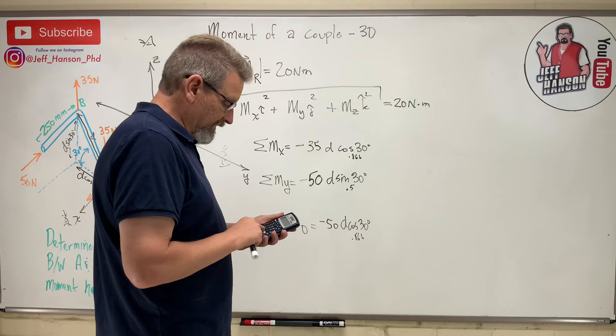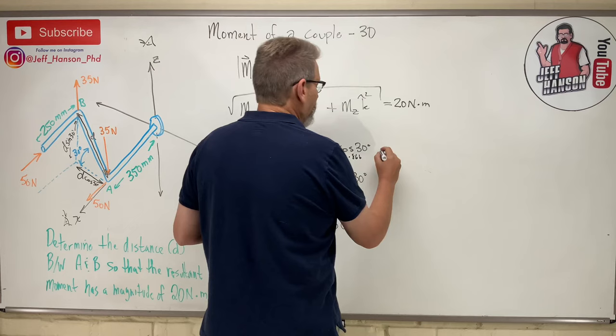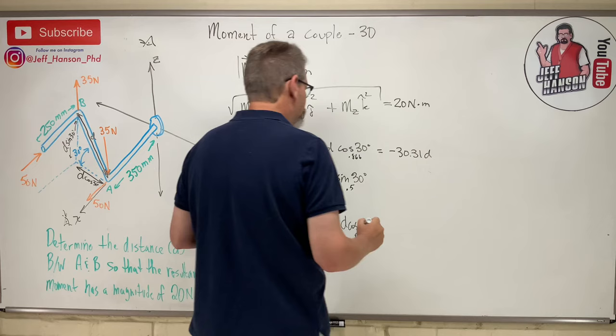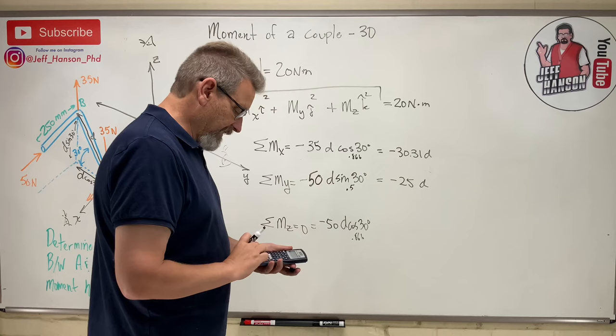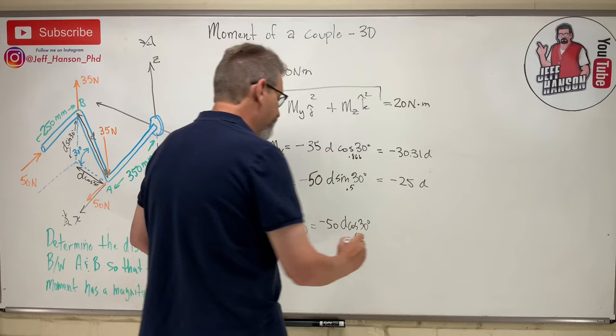So this whole thing: negative 30.31 d. This guy: half - I know that one, I can do it in my head - minus 25 d. And then this guy: 50 times 0.866 is 43.3.